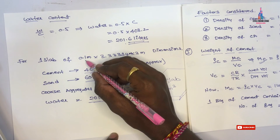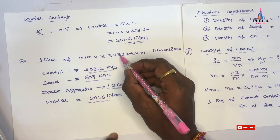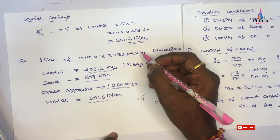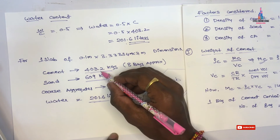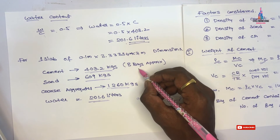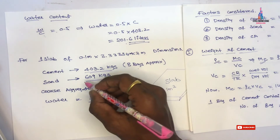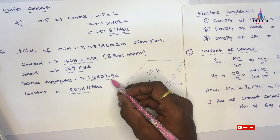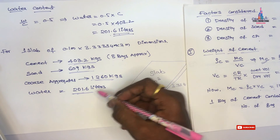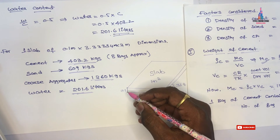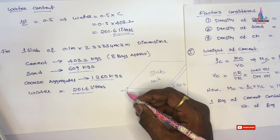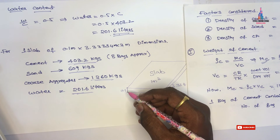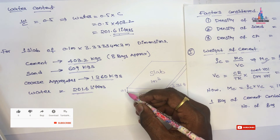This is the final calculation for casting 1 cubic meter of slab with dimensions 0.1 m thickness, 3.3334 m length, and 3 m width. The requirements are: cement 403.2 kg (approximately 8 bags), sand 609 kg, coarse aggregate 1260 kg, and water 201.6 liters. This is the complete process for calculating material quantities for M20 grade concrete for a 1 cubic meter slab.